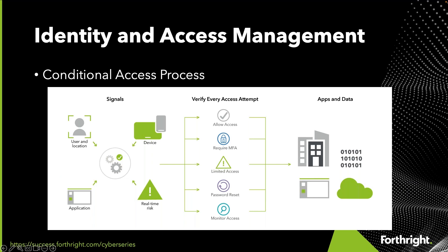In our overall identity and access management conversation, we've been talking about how to implement that using a conditional access process. The last episode, I talked about user and location signals. In this episode, we're going to tackle application management — another signal used to feed that conditional access system. This one is one of the most overlooked, along with device compliance, which we'll discuss next time. Today, we're going to talk about why that's important to your overall security infrastructure, the benefits of it, and how to implement it.